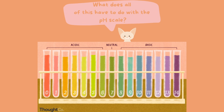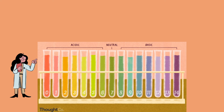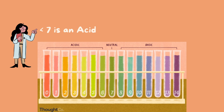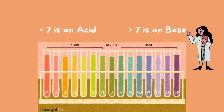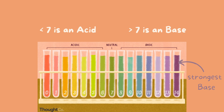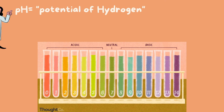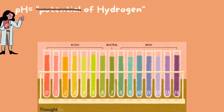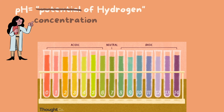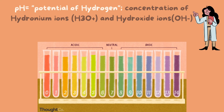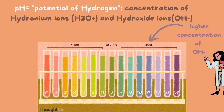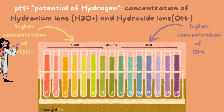So what does all of this have to do with the pH scale? The basics state that anything below 7 is an acid and anything above 7 is a base, and 7 itself is neutral. The further up the scale, the stronger the base; the lower the number, the stronger the acid. pH stands for potential of hydrogen — or think of it as concentration of hydrogen. More specifically, it refers to the concentration of hydronium ions and hydroxide ions. Basic solutions have a higher concentration of hydroxide ions; acidic solutions have a higher concentration of hydronium ions.